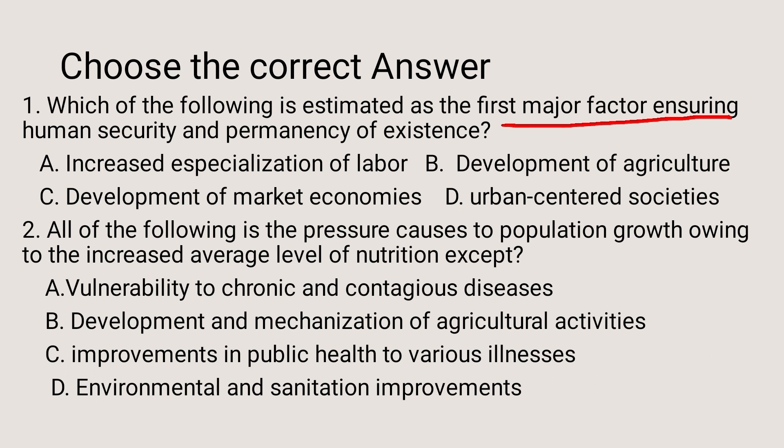For Ethiopian students and elsewhere in the world: B. Development of agriculture is estimated as the first major factor ensuring human security and permanency of existence. B is the answer. Because as agriculture is developed, the human population becomes secure from starvation and poverty. Whereas increased specialization of labor is second, development of market economies becomes the third major factor, and urban-centered societies becomes the fourth.